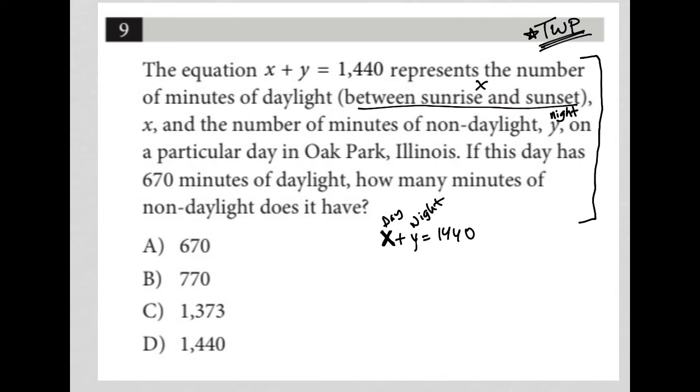If this day has 670 minutes of daylight, so that means x is equal to 670. How many minutes of non-daylight does it have? So the question is just asking, well, what's y equal if x is 670?